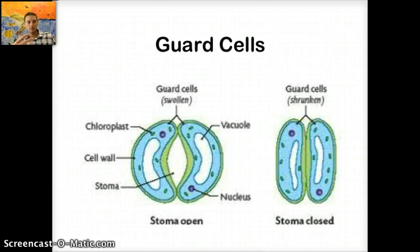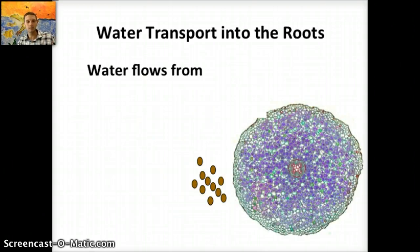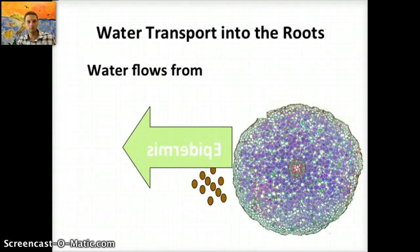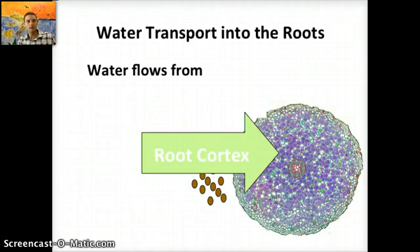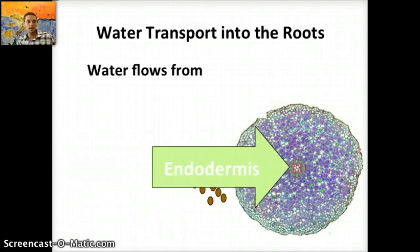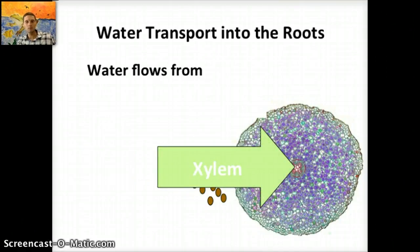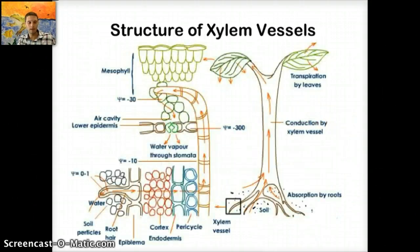Now that we understand how water evaporates and what affects the rate of transpiration, let's look more specifically at water moving through the xylem and through the structure of the plant. This starts all the way from the roots. Water flows from the soil past the epidermis, which is the outer lining of the plant, then past the root cortex, past the endodermis, and to the xylem — the structure we're focusing on. Water is moved through the plant via osmosis.